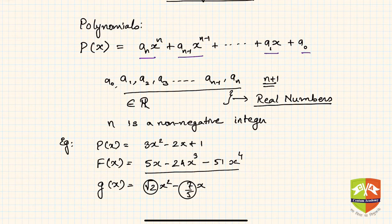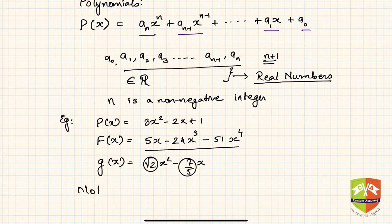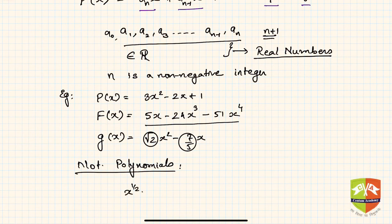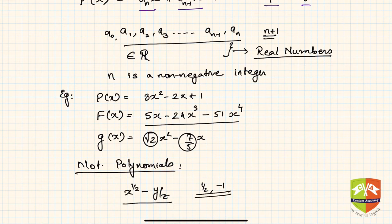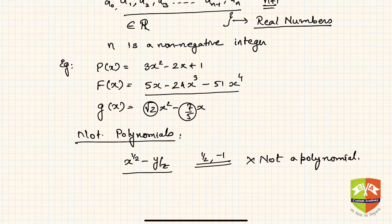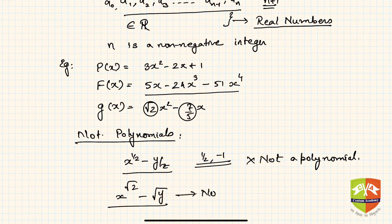Now let's look at what are NOT polynomials. An expression like x^(1/2) − y/z is not a polynomial — the power is one-half and z is raised to the power −1, which violates the non-negative integer exponent condition. Similarly, √2·x^√2 − √y is also not a polynomial, because the exponent √2 is not a non-negative integer.